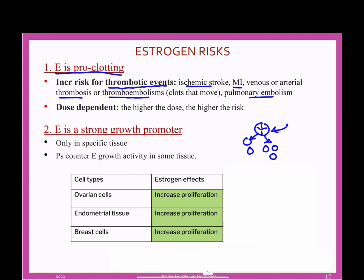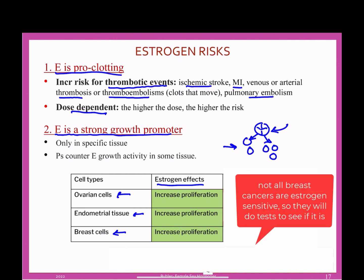These clotting risks can be very dangerous in people who have high clotting risk. You'll see that estrogen-based agents are often contraindicated for anyone who's had a stroke or an MI. But luckily, just like almost all drugs, it's dose dependent — at low doses you have lower risk, at high doses you have higher risk. Estrogen being a growth promoter only affects some tissues. Not all tissues have estrogen receptors, and not all of them respond to estrogen with growth. But some really important ones do: estrogen increases proliferation in ovarian cells, endometrial or uterine cells, and breast cells.